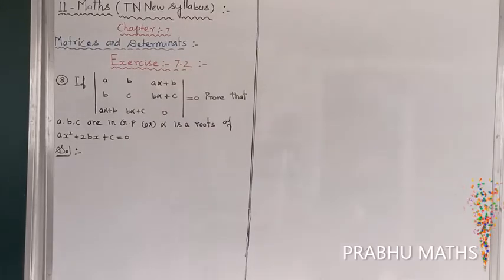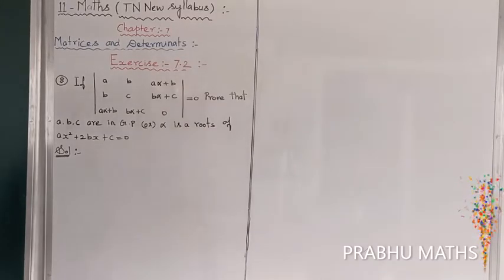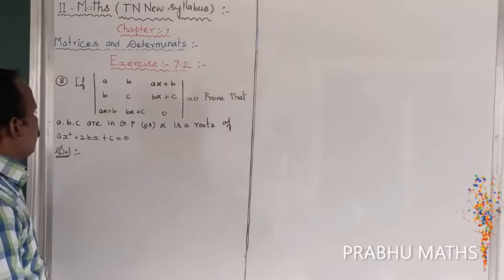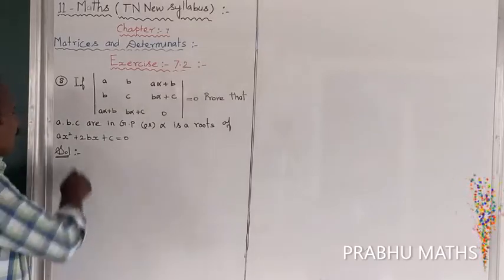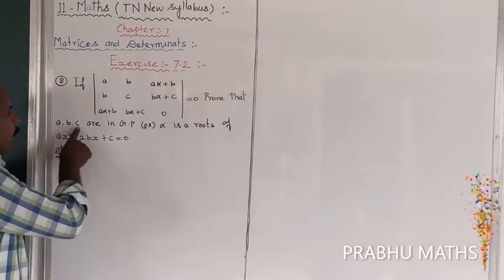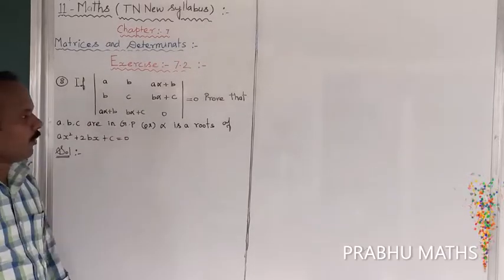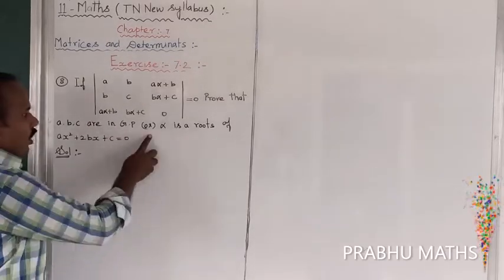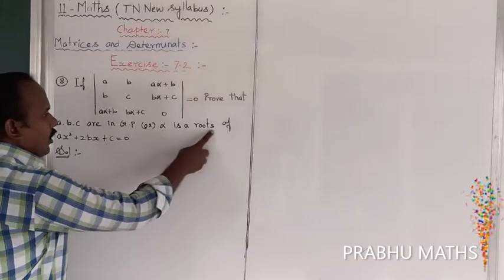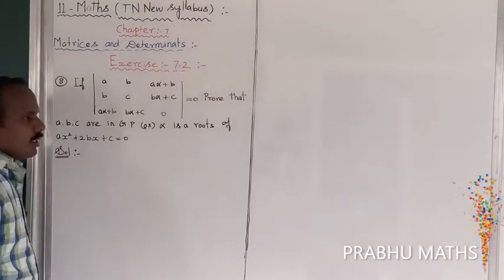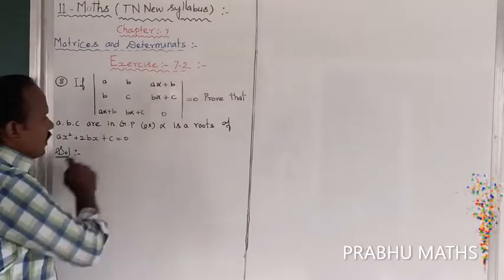Xi is 7.2, 8th sum. If the determinant is equal to 0, prove that A, B, C are in GP. So, alpha is the root of the given equations, for the equations.